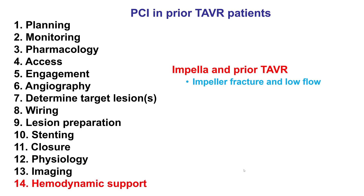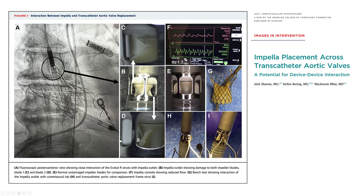Finishing up with hemodynamic support: there is a word of caution if an impeller is used in patients who have previous TAVRs, specifically with the Evolute valve, because the struts of the frame may actually interfere with the impeller and lead to fracture of the impeller blades. That can lead to low flow as well as embolization. So impellers should be used with caution, or not used, in patients who have TAVR — especially with the Evolute CoreValve.